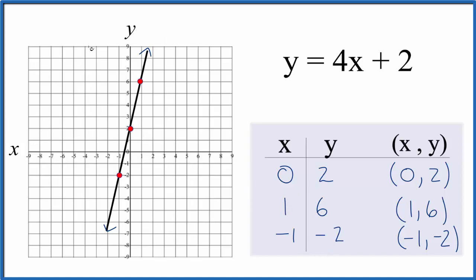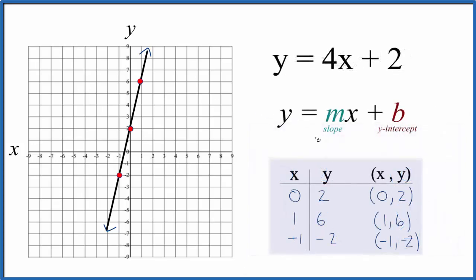Now we can check our work with the slope-intercept formula. We have y equals mx plus b. m, that's our slope, that's 4, and the y-intercept, that's 2.